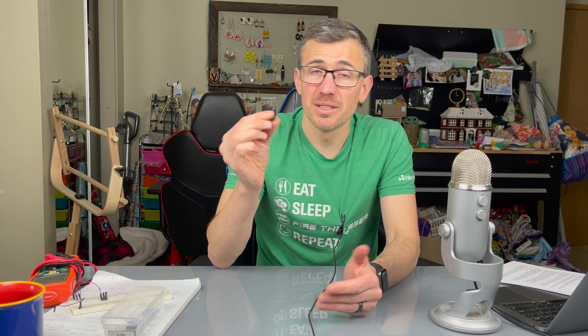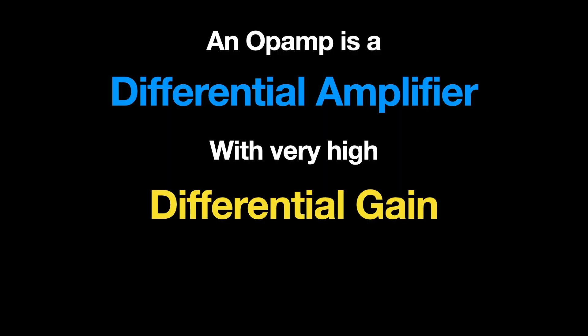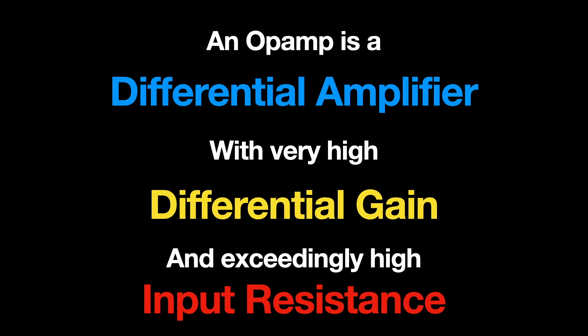A differential amplifier is a very similar concept, except now we have two inputs, V plus and V minus, a non-inverting and an inverting input. A differential amplifier looks at the difference between those two and multiplies it by some number we call the differential gain. It's looking at the difference between the inputs, multiplying it by some number, hence a differential amplifier. An op amp is simply one of these differential amplifiers, except with a very high gain, an exceedingly high gain which is almost uselessly high, a million or so.